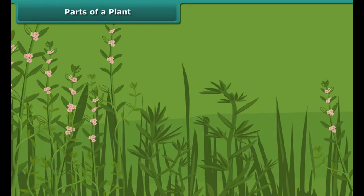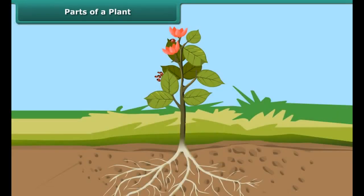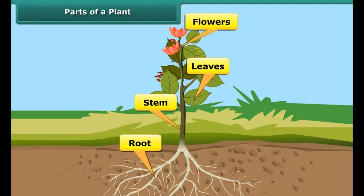A plant body has four main parts: root, stem, leaves, and flowers, with each part performing a specific function. Let us look at the roots and stems in greater detail.